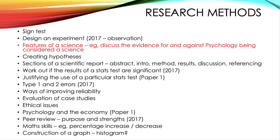You may also need to create a hypothesis, and there may be a question on different sections of a scientific report — within that you've got your abstract, introduction, method, results, discussion, and then a question on referencing could come up. You may need to work out if the results of a stats test are significant, as we did see this in 2017. You may also need to justify the use of a particular stats test — this was a question in paper 1 but could come up again, perhaps less likely.